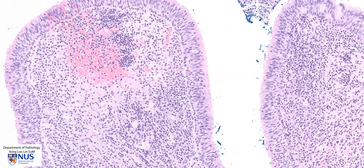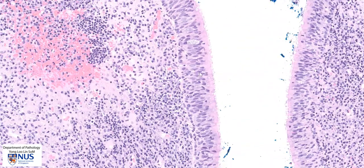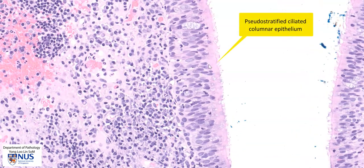We can see often that these biopsies come a little bit fragmented in small pieces. Zooming into this area, we can still see the normal overlying epithelium, which is this ciliated pseudostratified columnar epithelium or respiratory epithelium, and we can see a goblet cell here.